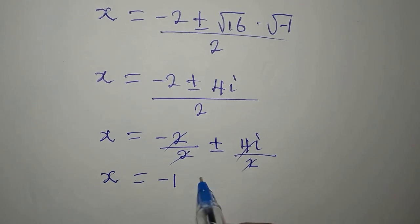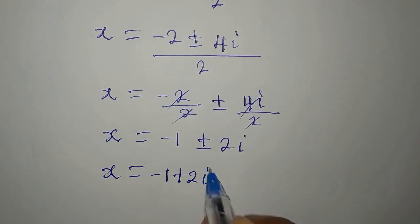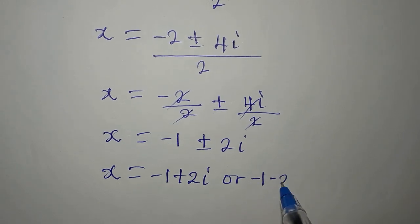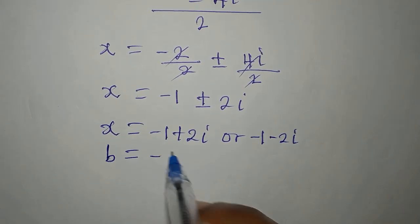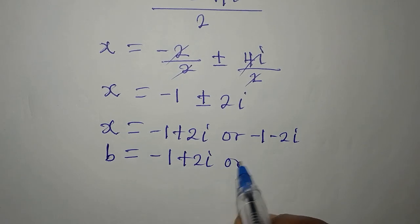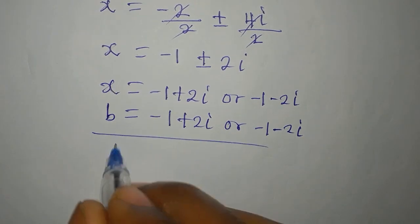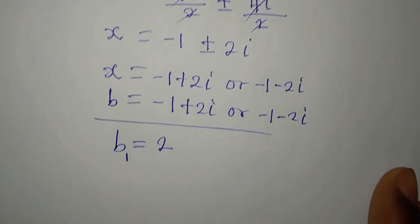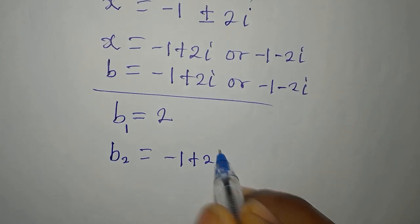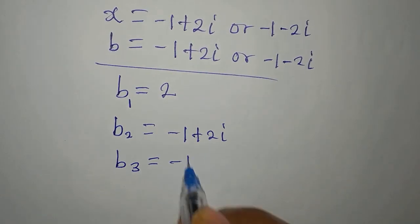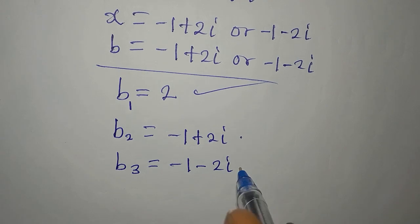Splitting the fraction, x equals minus 2 over 2 plus or minus 4i over 2, which simplifies to x equals minus 1 plus or minus 2i. So our three solutions are: B equals 2 (the only real solution), B equals minus 1 plus 2i, and B equals minus 1 minus 2i. The last two are complex solutions.